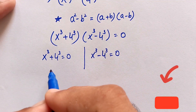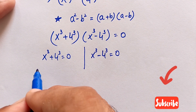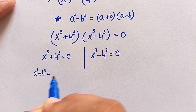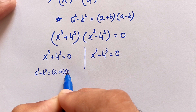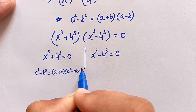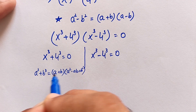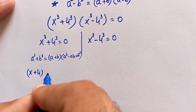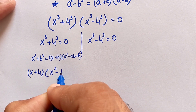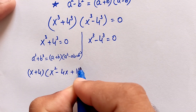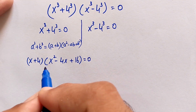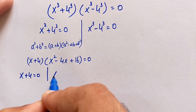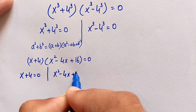To solve case one, we use the sum of cubes identity: a cubed plus b cubed equals (a plus b)(a squared minus ab plus b squared). Applying this, we get (x plus 4)(x squared minus 4x plus 16) equals 0. This gives two sub-cases: x plus 4 equals 0, and x squared minus 4x plus 16 equals 0.